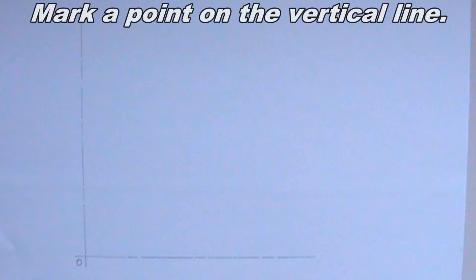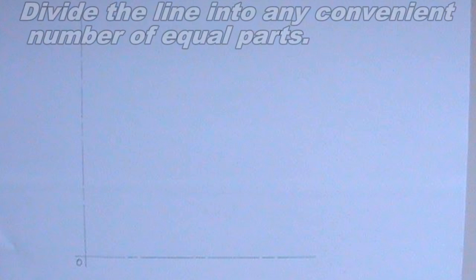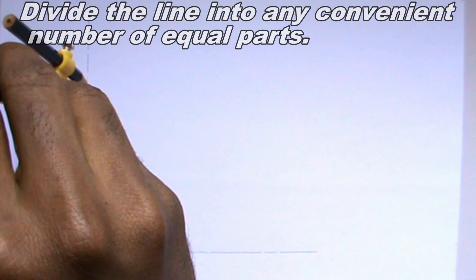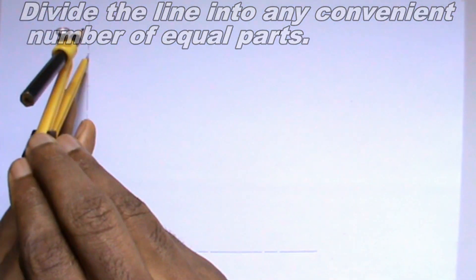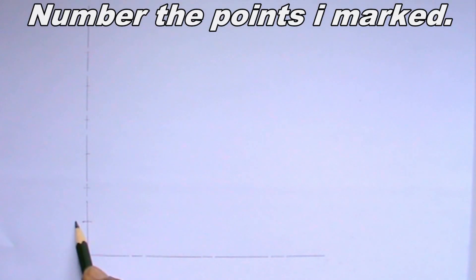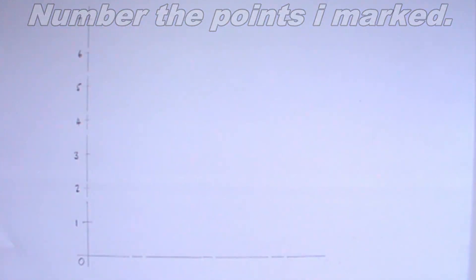Next, I will mark a point on the vertical line. This point should be 130 mm from point O, after which I will divide the line into any convenient number of equal parts. I will number the points I marked. I will label the end of the horizontal line x and the end of the vertical line y.